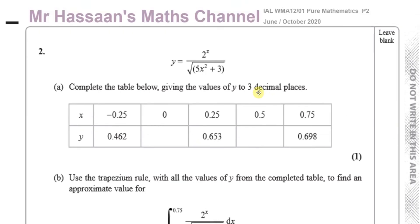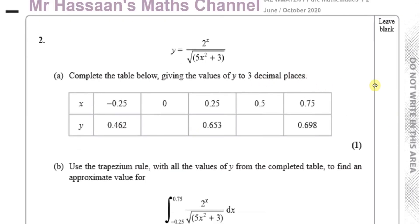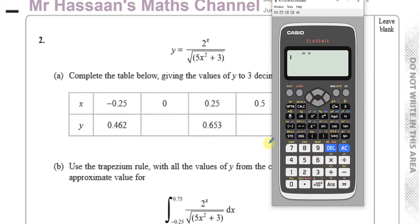Part A tells us to complete the table, giving the values of y to 3 decimal places. We have the equation y equals 2 to the power of x divided by the square root of 5x squared plus 3. So we have to substitute the values of x that are given into this equation. Basically we just take our calculator and substitute those values in.